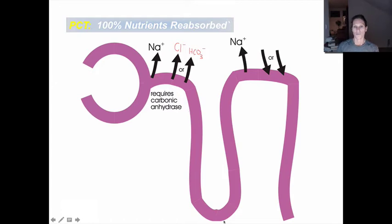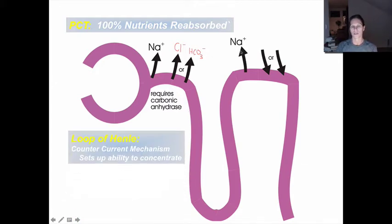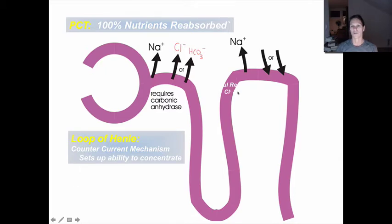Next is the loop of Henle. We won't talk too much about it, but the drugs that act on it work at the top of the loop. At the top of the ascending limb, there is a powerful reabsorption via a counter-transport mechanism where sodium, chloride, and calcium all go together.